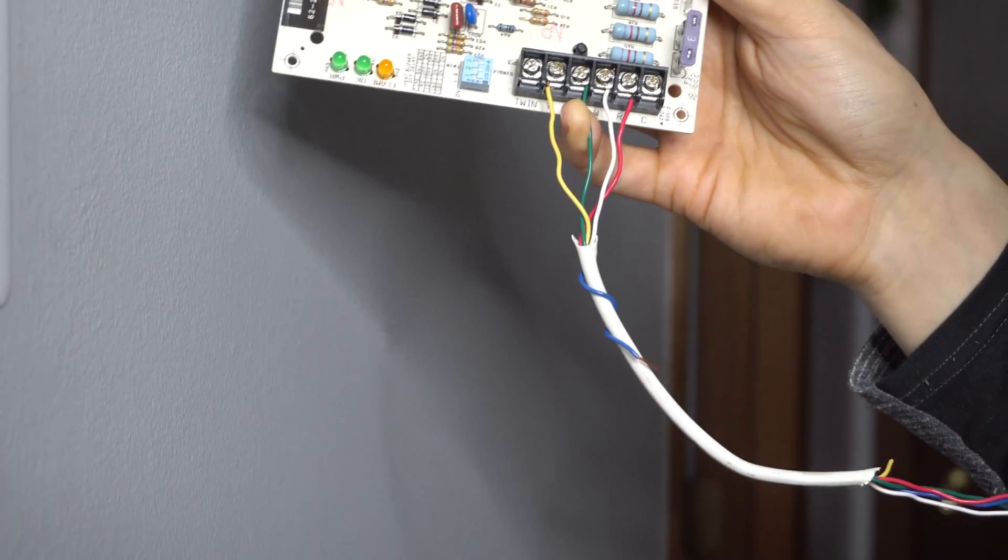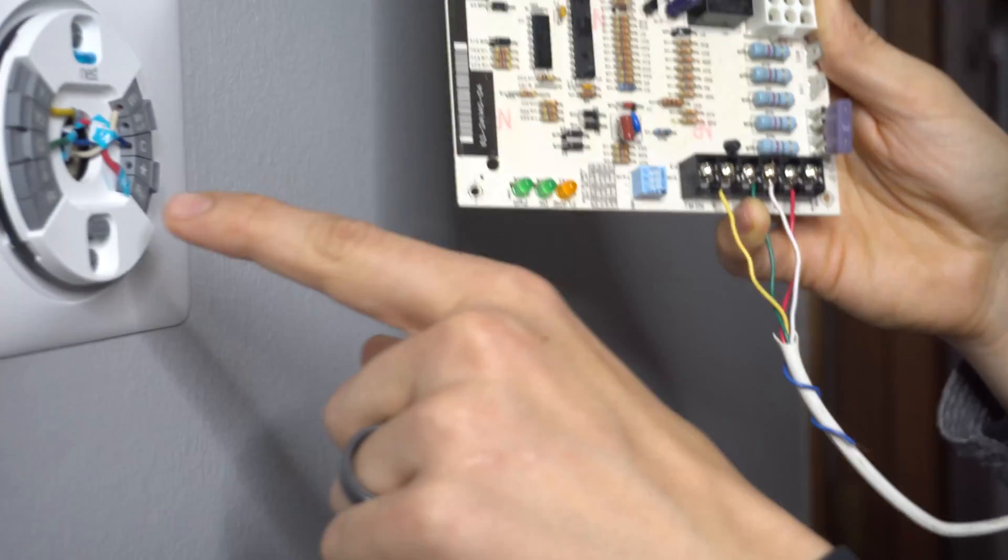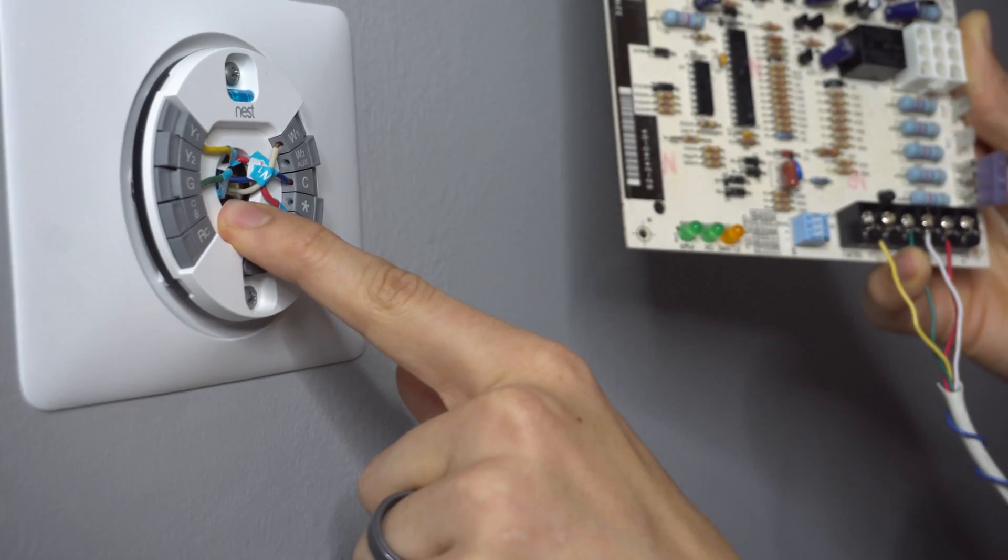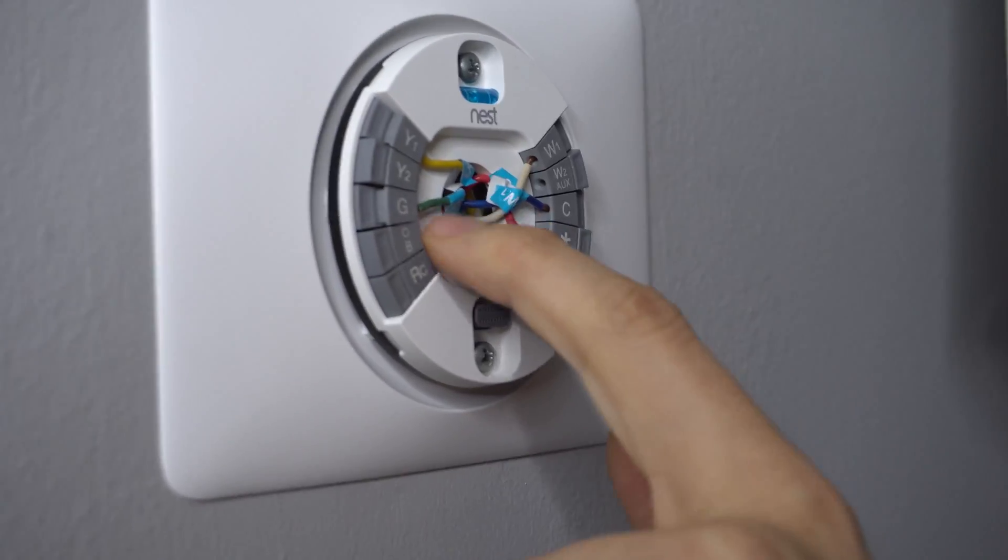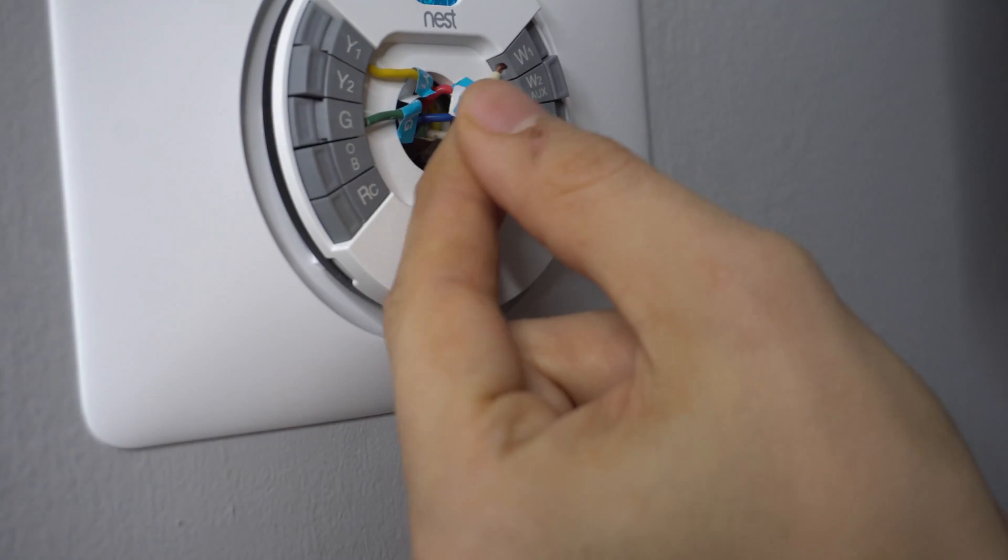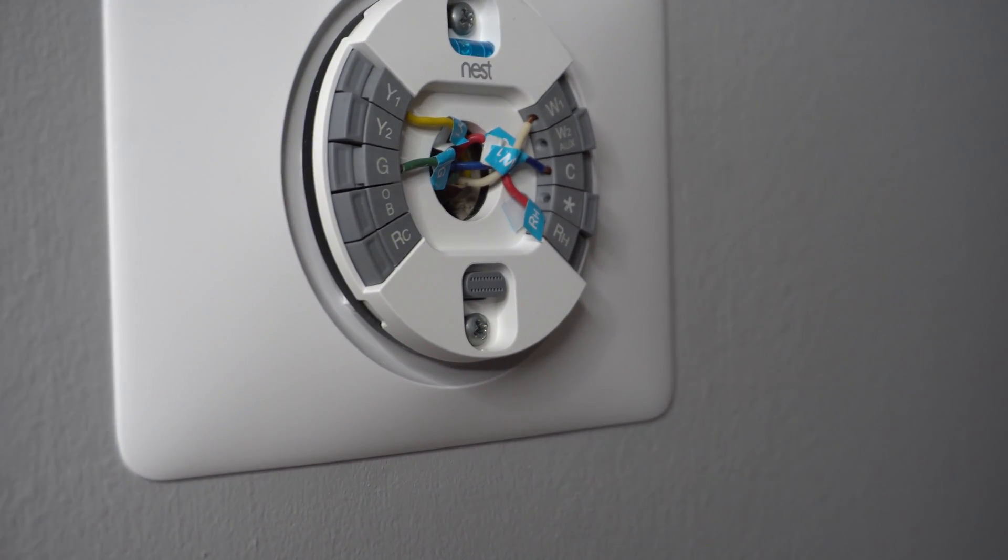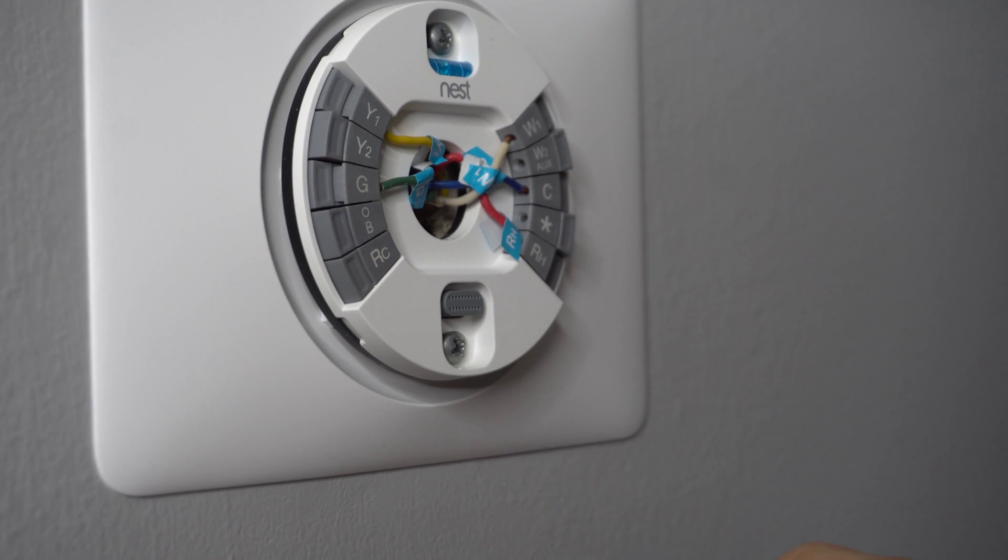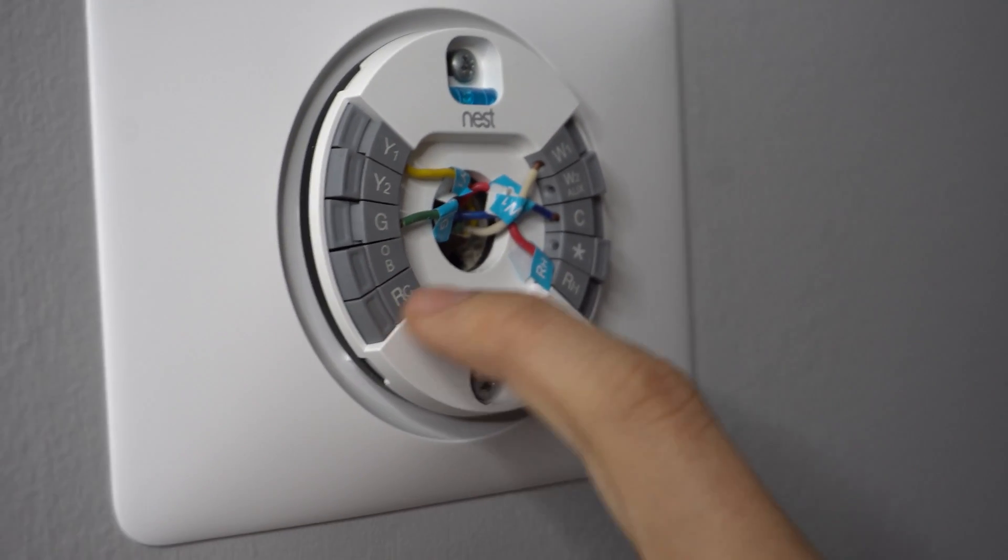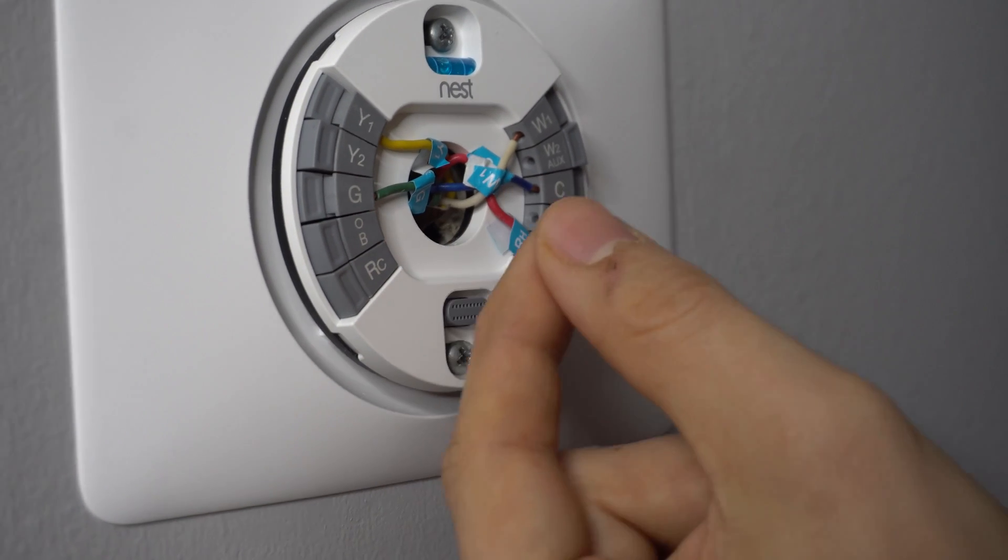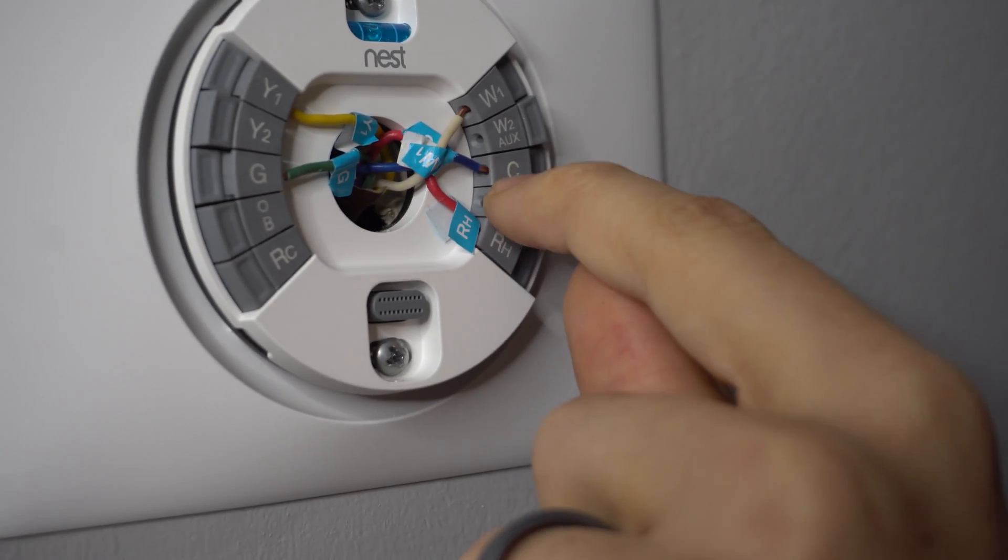And method number three is to use the G wire, which is the fan, for the common wire. So what you would do is go to your Nest thermostat, take off the G wire. Usually it's going to be the green wire going to G, so you press on it, you pull it out. And before you do any of this, you want to turn the power off to your furnace, either at the power switch by the furnace or the air handler, or turn the circuit breaker off. Turn the power off, then take this G wire, pull it out, and plug it into your common wire or the common terminal right here.